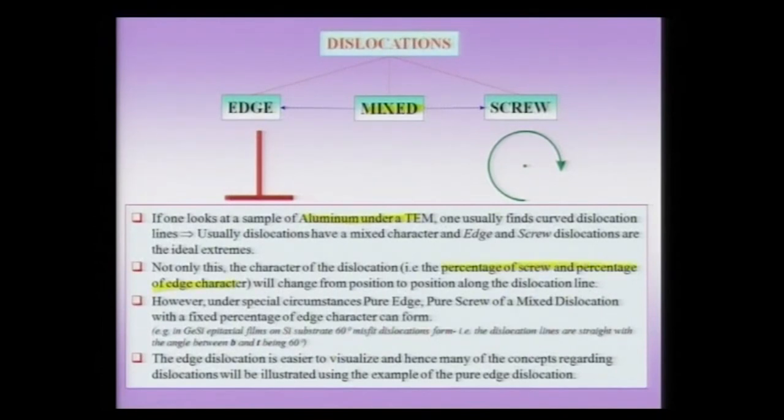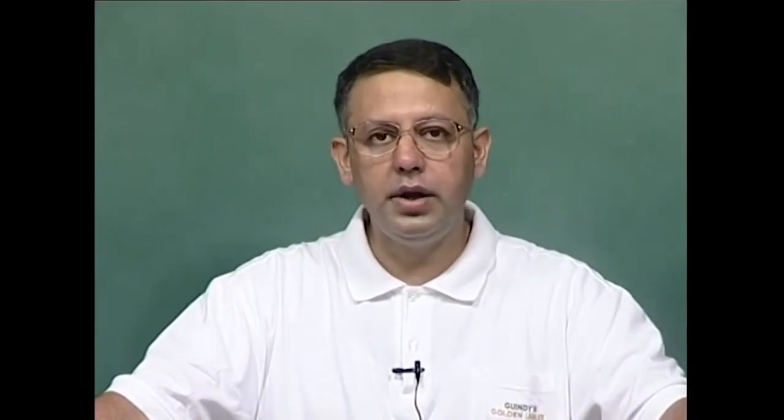What we mean by these terms we will understand very soon by taking a curved dislocation and seeing how character changes from position to position along the dislocation line. If I take a point on a dislocation line observed under a transmission electron microscope, it will have a certain edge character and a certain screw character. The mixed dislocation can be decomposed into these two parts — the edge and screw extremes. Taking another point along the same dislocation line, the percentages change, and therefore the edge and screw character change along the dislocation line.